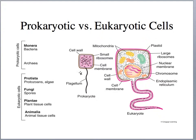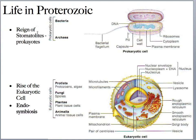For eukaryotic cells, because there is a central nucleus and larger cell size, they have specialized organelles. These include the Protista, Fungi, Plantae, and Animalia. During the Proterozoic, we're finding stromatolites, which are primarily bacteria and prokaryotic cells. But by the Neoproterozoic, we begin to see eukaryotic cells through a process called endosymbiosis.